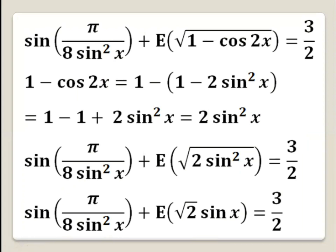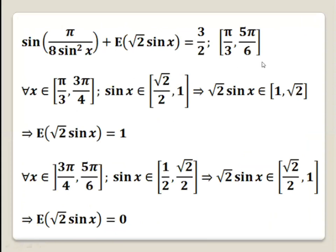Now we can solve the equation. We are working with the interval pi over 3 to 5 pi over 6. To make the solving easier, we have to split this interval into two sub-intervals: from pi over 3 to 3 pi over 4, and from 3 pi over 4 to 5 pi over 6.